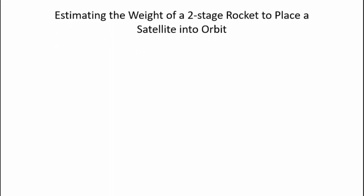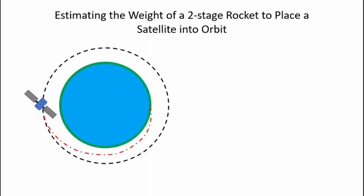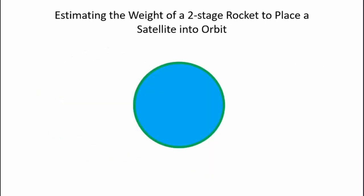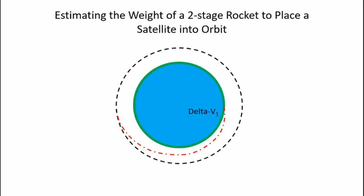What we want to do is estimate the weight of a two-stage rocket to place a satellite into orbit. Here's our orbital configuration: a satellite that we ultimately want to reach a circular orbit some altitude above the surface of the Earth. I'm going to use a two-stage rocket to do that. For this example, I want that final orbit to be 100 nautical miles above the surface of the Earth. A nautical mile is 6,080 feet, so it's a little bit larger than a statute mile. The rocket starts at a standstill. We have to impart a delta-V to get the rocket to ascend through an elliptical orbit to achieve an altitude at apogee equivalent to the desired circular orbit. Once we get to apogee, we need to fire rocket motors again to impart a second delta-V to circularize that orbit.